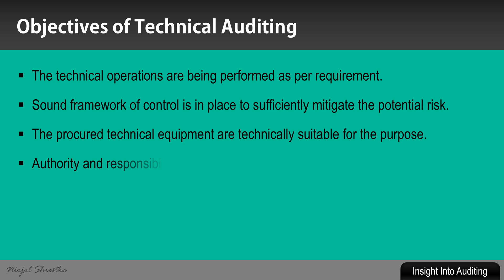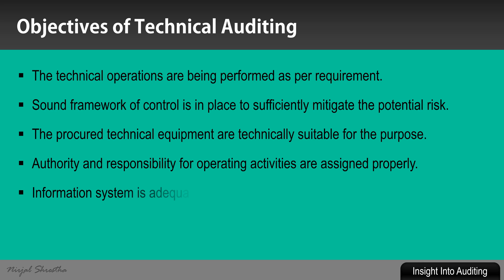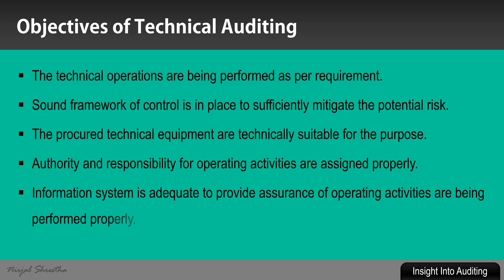It ensures that over the chain of hierarchy, authority and responsibility for operating activities are assigned properly, meaning every line management is clear about the authority and responsibility of the line department and uses the assigned authority to accomplish that responsibility. It also ensures that the information system is adequate to provide assurance that operating activities are being performed properly.